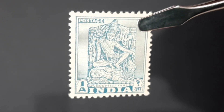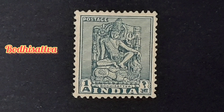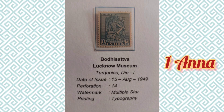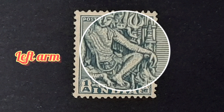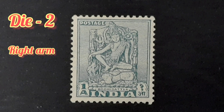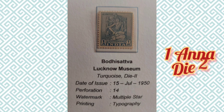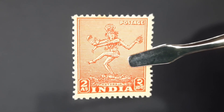The next stamp is the one anna stamp. This stamp depicts the image of the Bodhisattva sculpture found at the Lucknow Museum. As per Buddhism, Bodhisattva means a person who is on the path towards Bodhi or Buddhahood. Later it was found that the sculpture was depicted incorrectly, with the left arm resting on the knee, whereas the actual sculpture has the right arm resting on the knee. To rectify this, a new stamp was issued on 15th July 1950 with the correct image of the Bodhisattva.